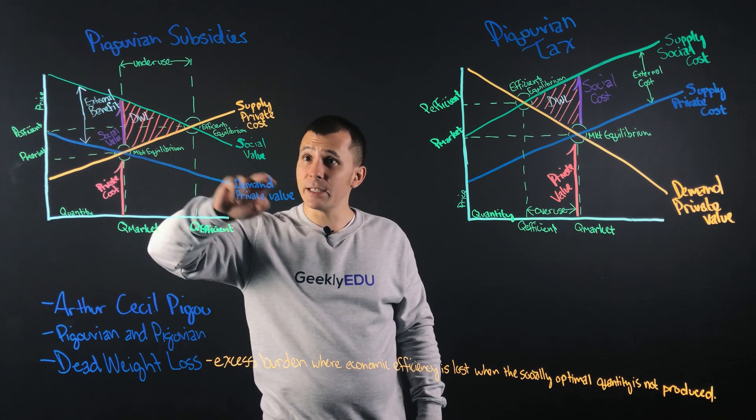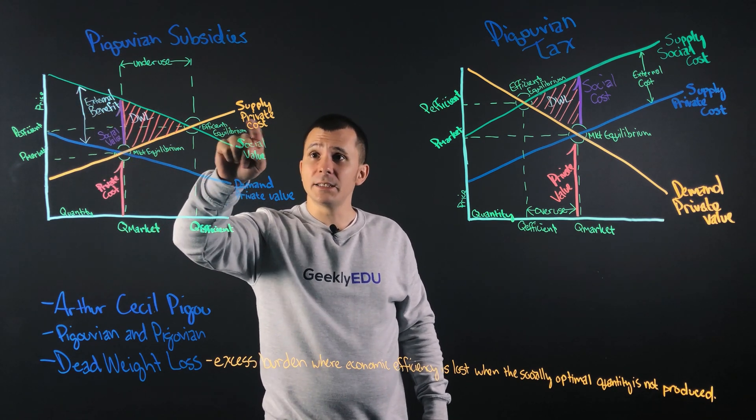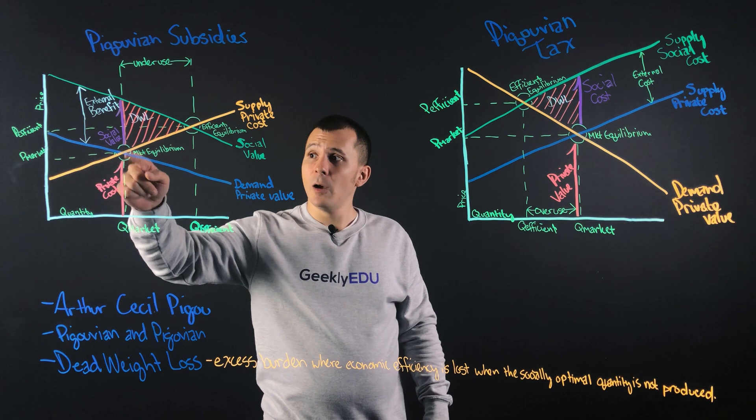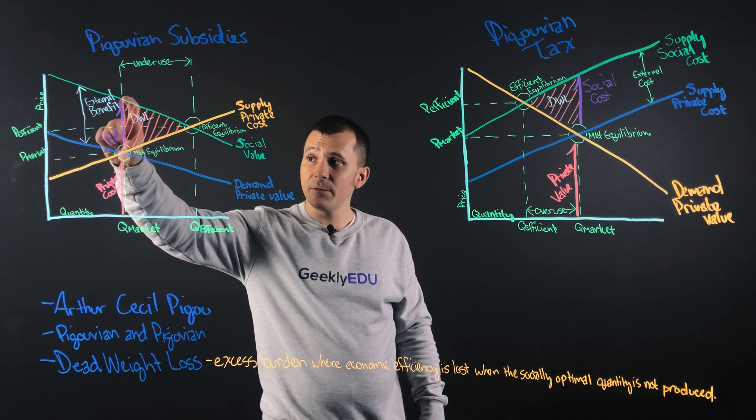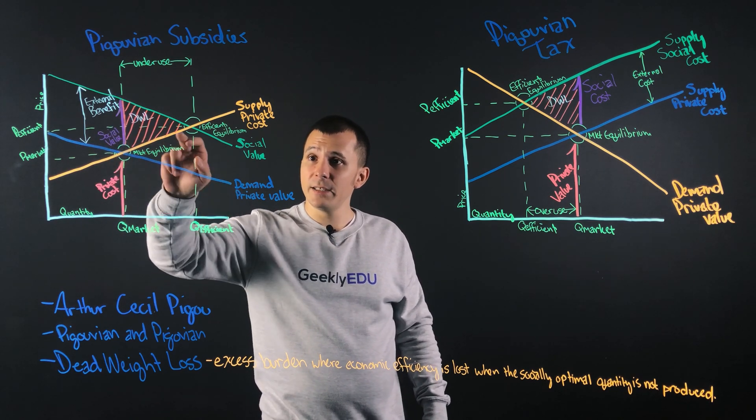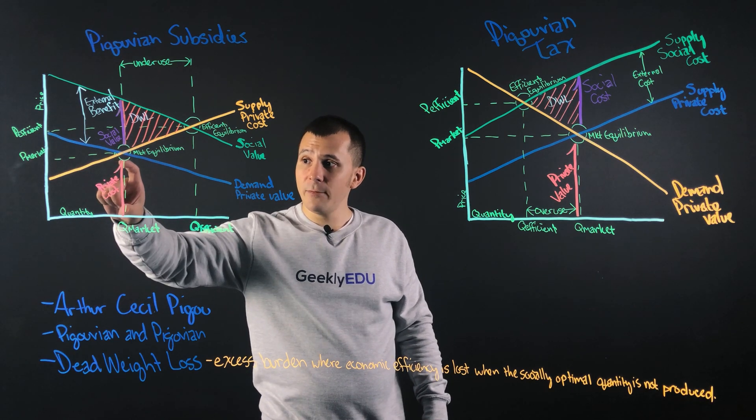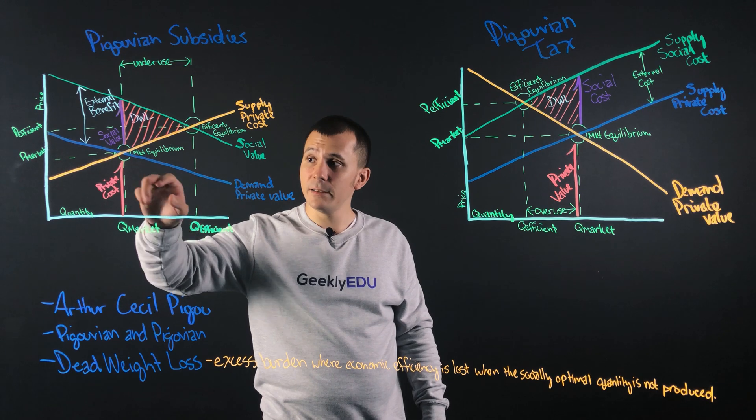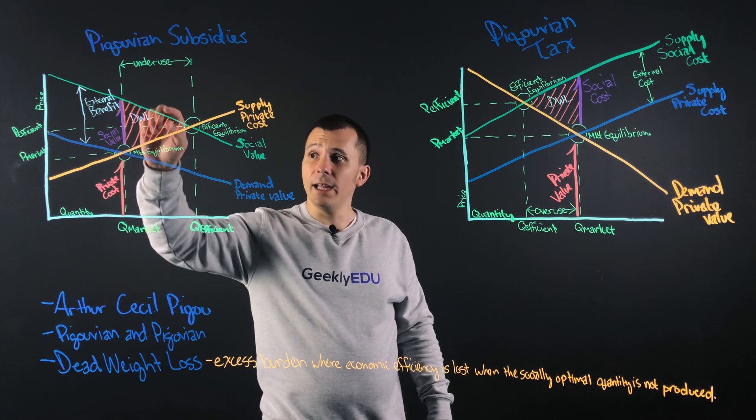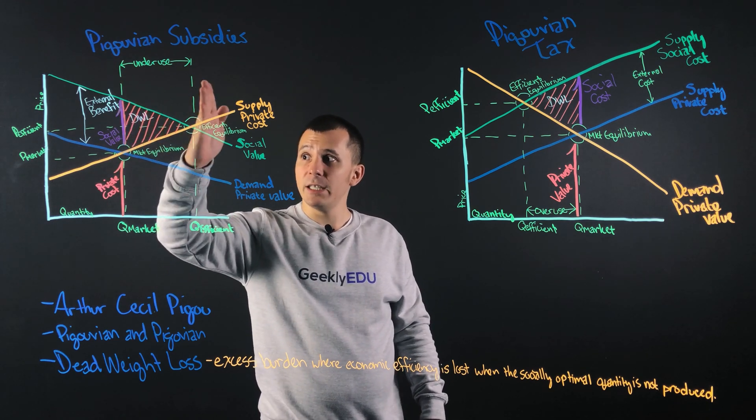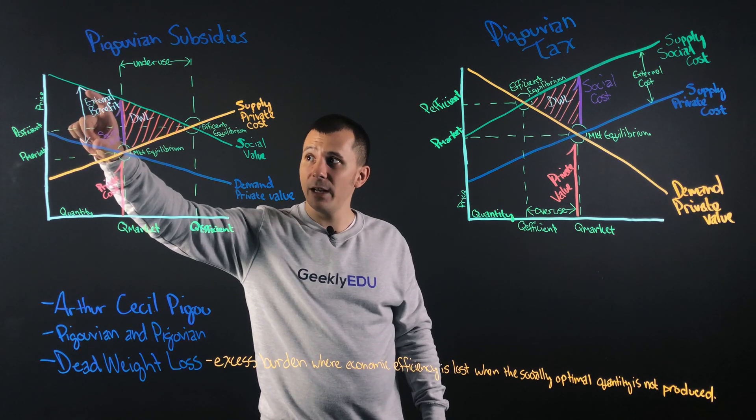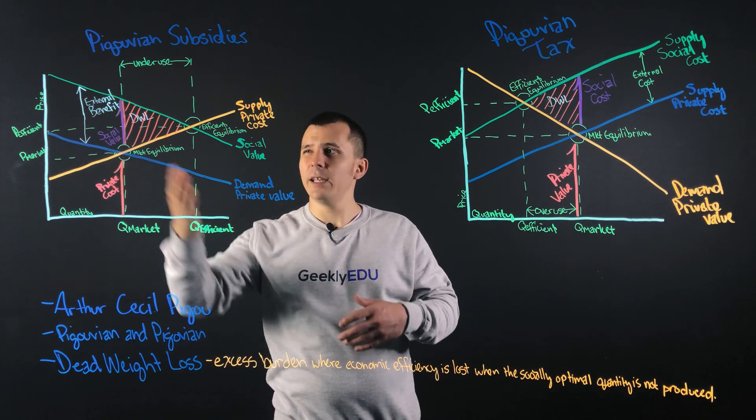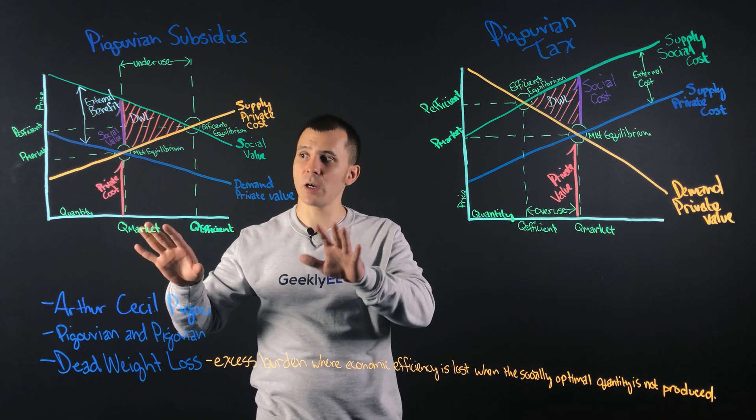This line is our social value. This is a supply of the private cost. Over here, we have the social value difference between the demand and the social value. And down here, we have the private cost for the institution to provide the service. Now, over here, we have an underuse issue. And the external benefit is here. Now, external benefit, now that we've talked about this chart.